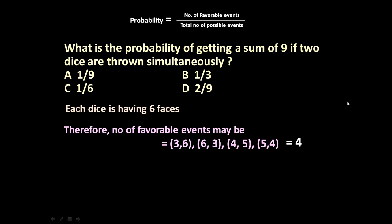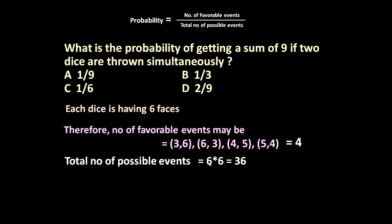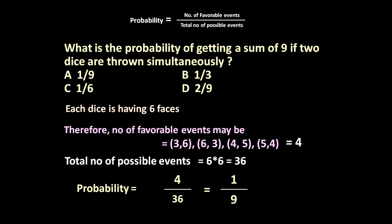Now, how many total possible events are there? The total number of possible events is six into six, which gives 36 different combinations when two dice are thrown simultaneously. In our favor only four outcomes are possible, so probability equals four divided by 36, which equals one by nine.